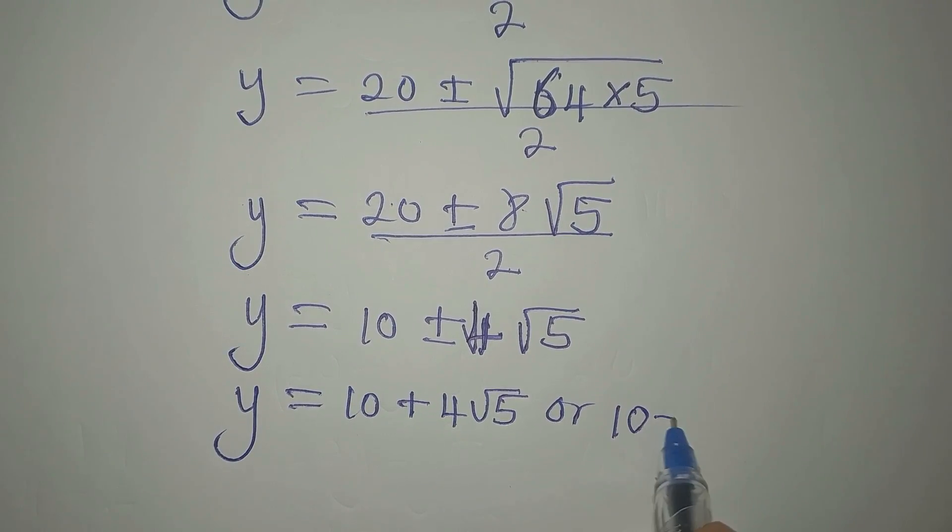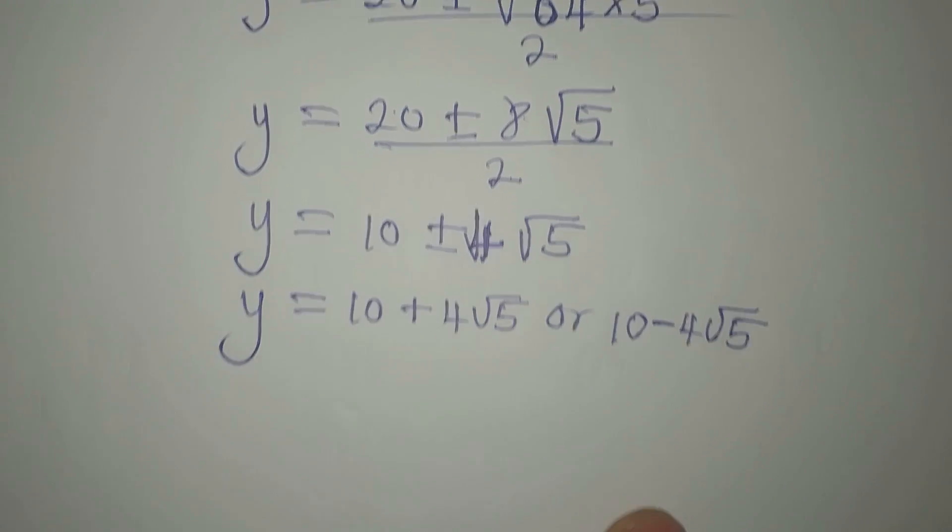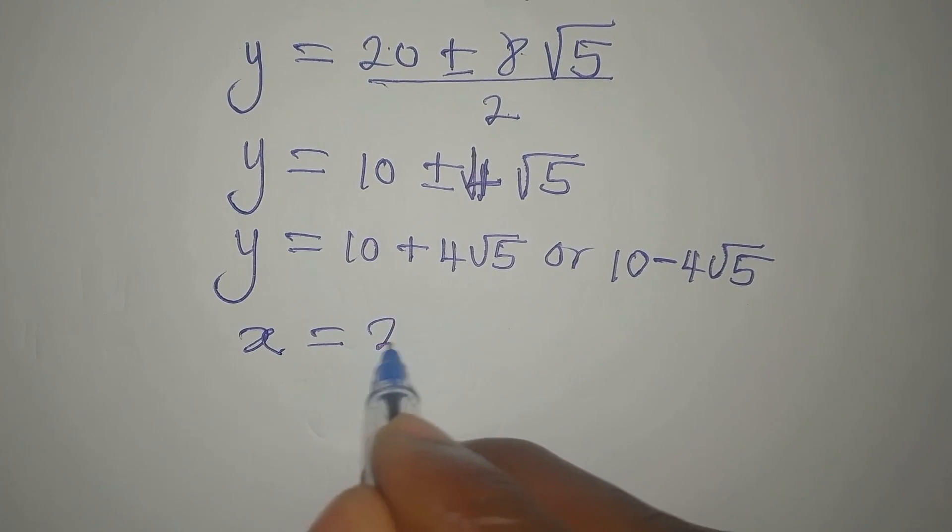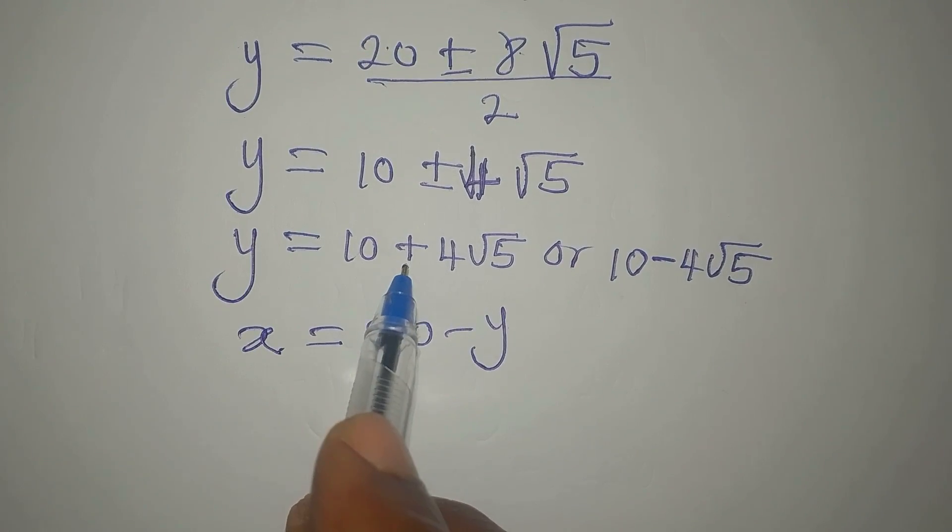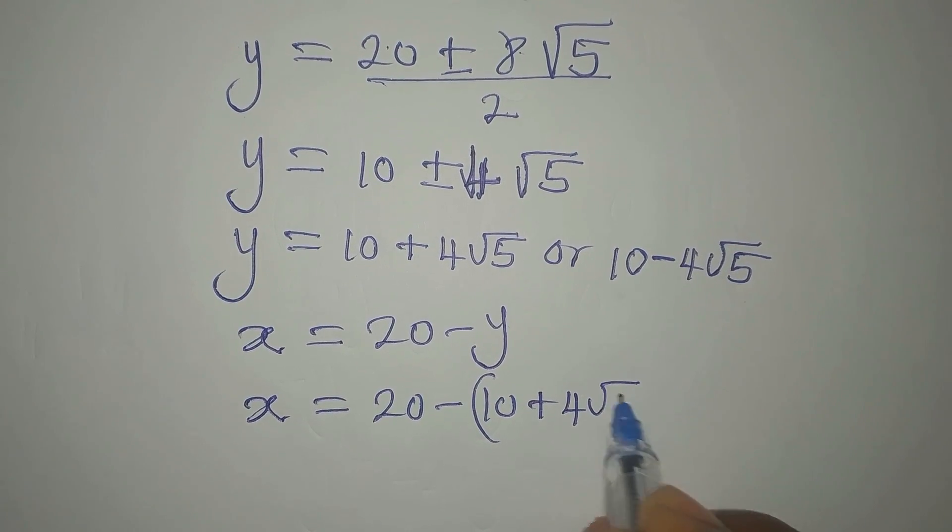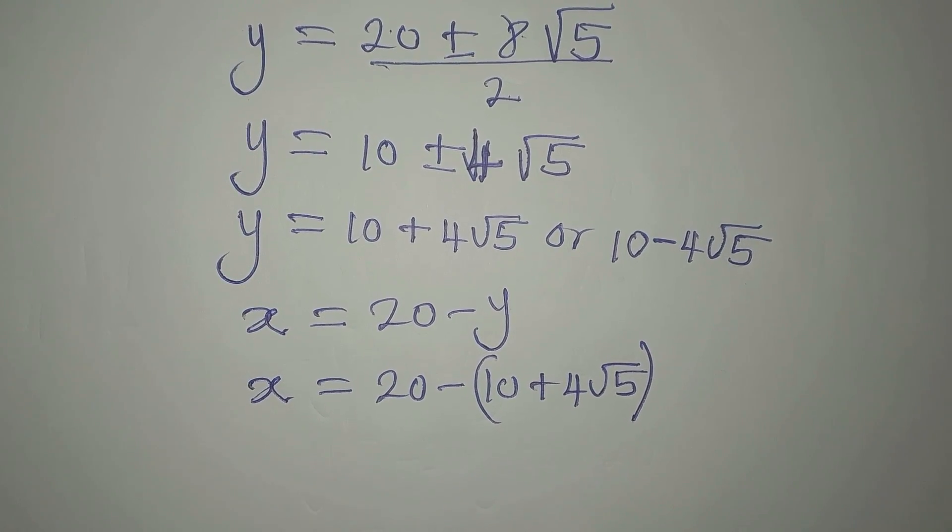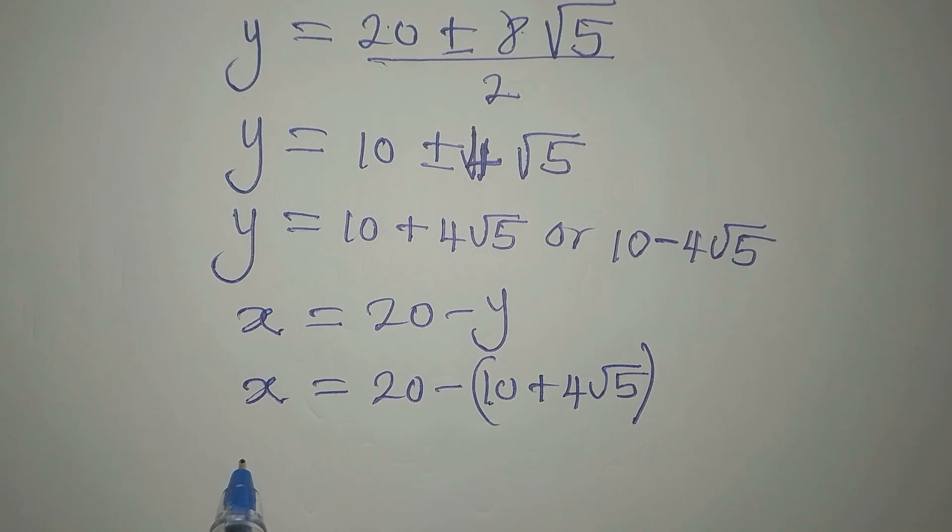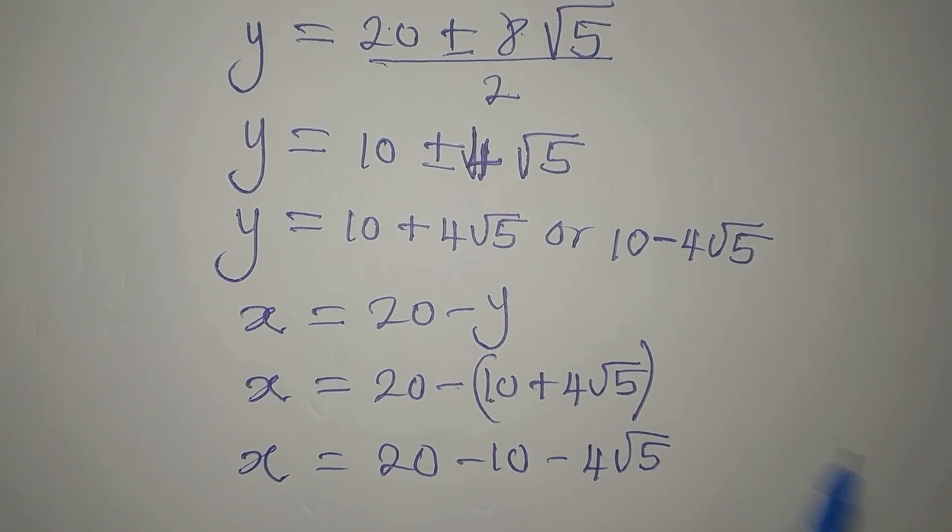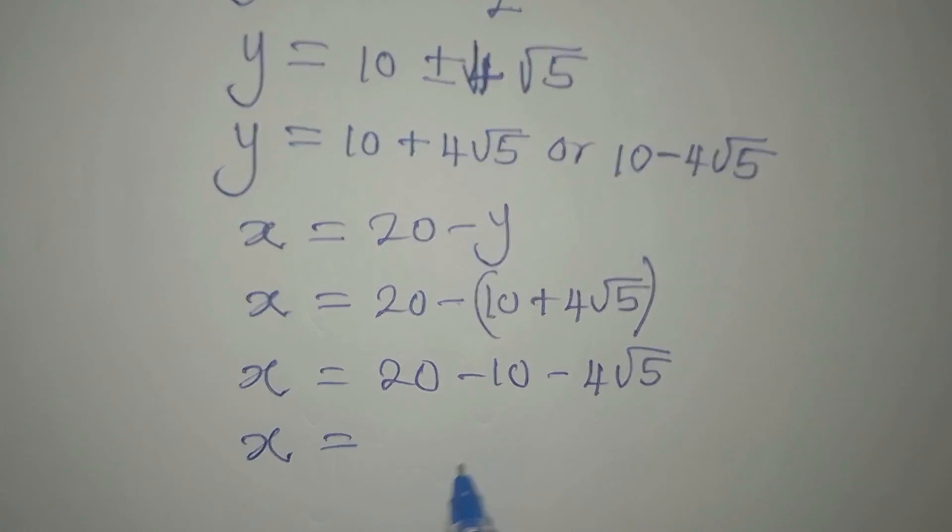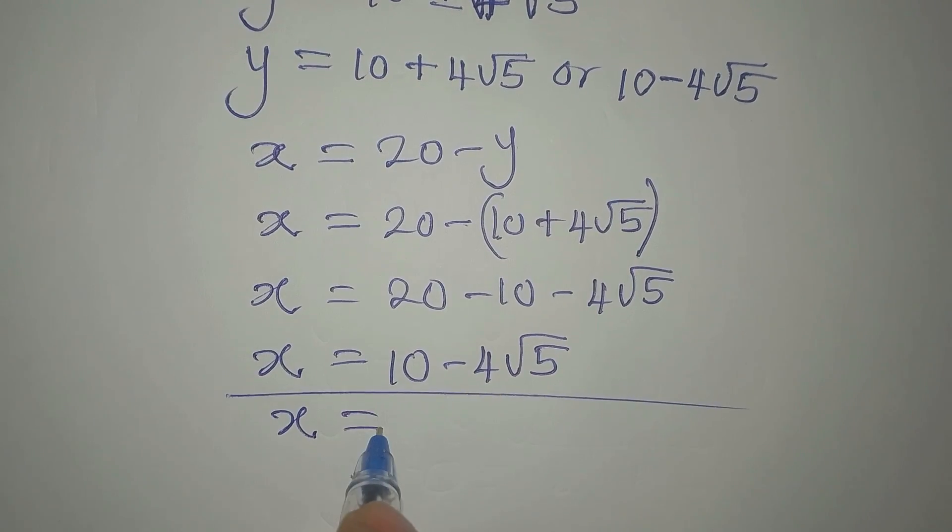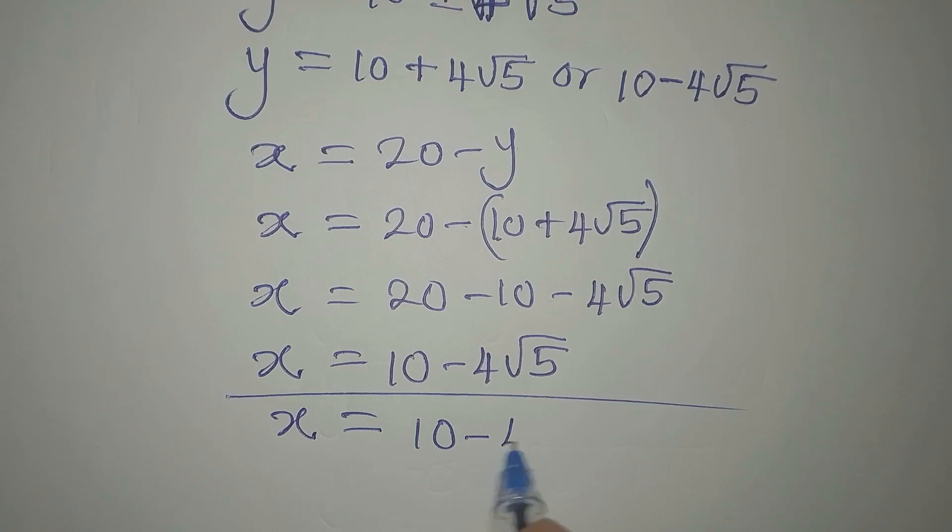Once we have this, we'll go back to equation three where we had x to be equal to 20 - y. Let's work with the first value of y. x will now be 20 - (10 + 4√5). If you fail to put this bracket, you will be wrong because everything in this bracket is y. Now x will now be 20 - 10 - 4√5. The negative will open this bracket, and our x will now be 10 - 4√5.